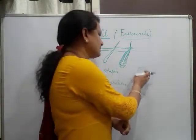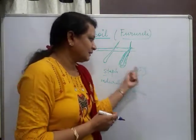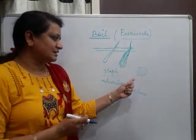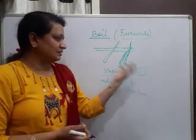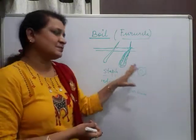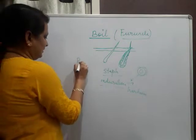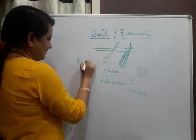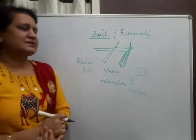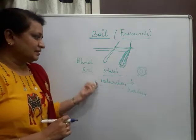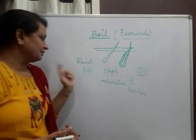The yellow pustule later on ruptures and discharges pus, and this is healed by granulation tissue and fibrosis. So this is a small swelling with surrounding induration and hardness, then it becomes soft in the center, ruptures, releases pus, and heals. Now, what is a blind boil? A blind boil is a boil which subsides without suppuration — it is an infection but it doesn't have a discharge. That is a blind boil.